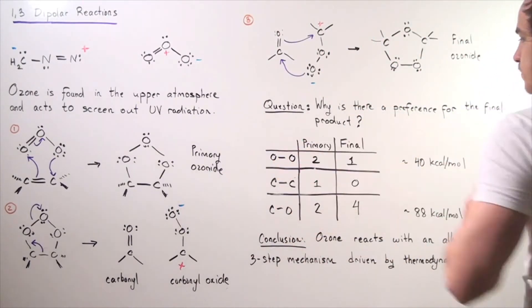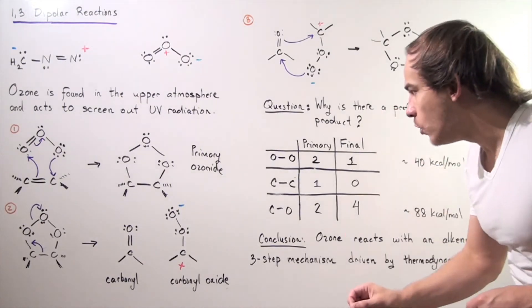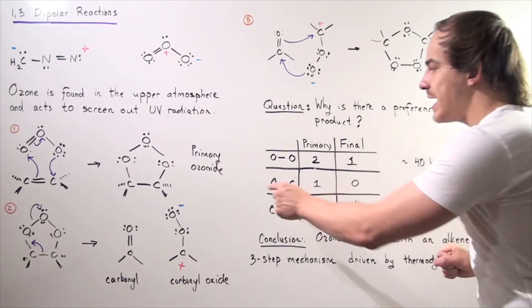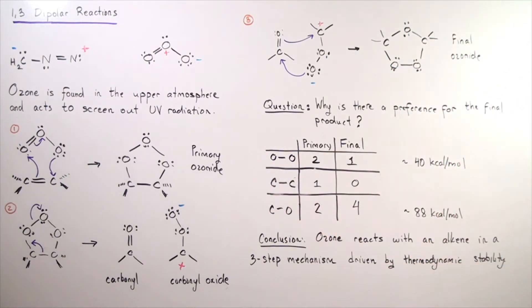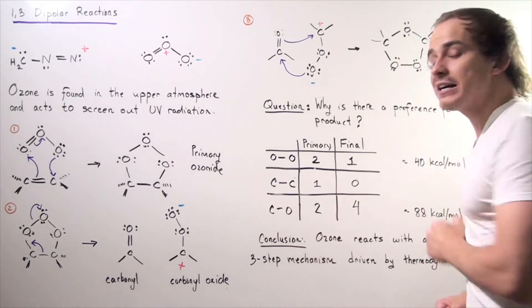So here we have a chart. Now, recall that it takes approximately 40 kilocals per mole of energy to break this oxygen-oxygen bond. Likewise, it takes approximately 88 kilocals per mole of energy to break one mole of carbon-oxygen bond.